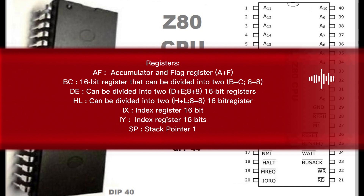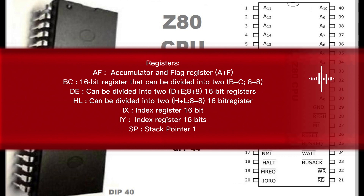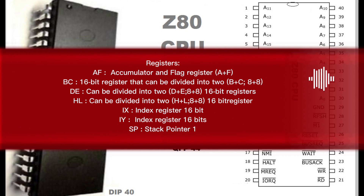Registers: AF — accumulator and flag register, A plus F. BC — a 16-bit register that can be divided into two 8-bit registers B plus C. DE — can be divided into two 8-bit registers D plus E, also 16-bit registers.